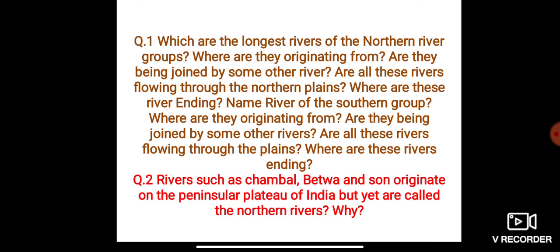Question number one: as you can see from your textbook, which are the longest rivers of the northern river groups? Where are they originating from? Are they being joined by some other rivers? Are all these rivers flowing through the plains, and where are they ending? Also name rivers of the southern group: where are they originating from, are they joined by other rivers, and where are they ending?